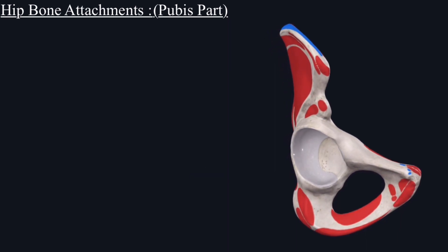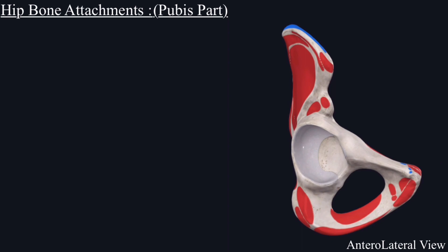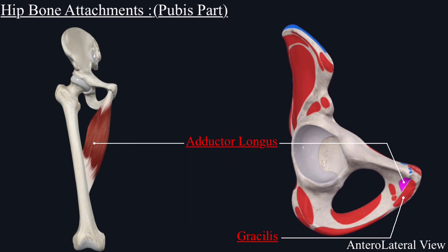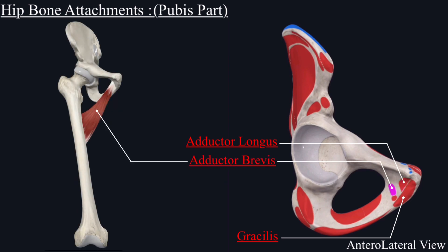The anterior surface of the pubis body and the external surface of the ischiopubic rami is where most of the medial compartment of the thigh muscles originate. The gracilis muscle originates from the external surface of the pubis body and ischiopubic ramus. The adductor longus muscle originates from the external surface of the pubis body. The adductor brevis muscle originates from the external surface of the pubis body and inferior pubic ramus.